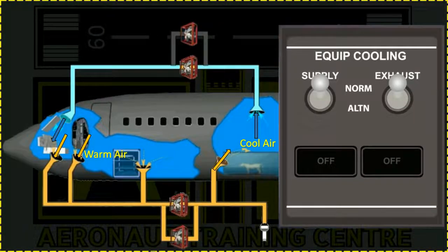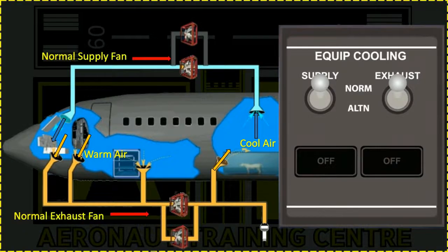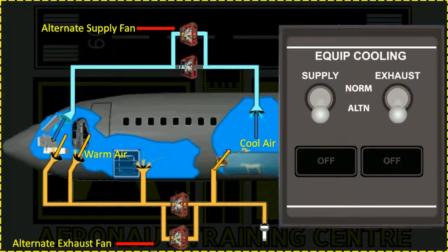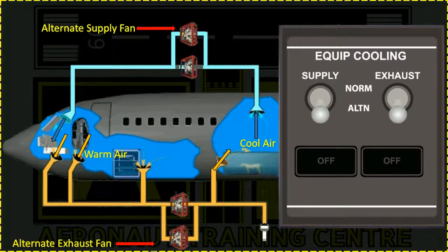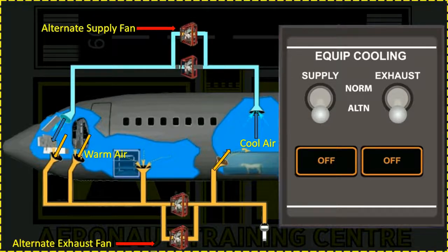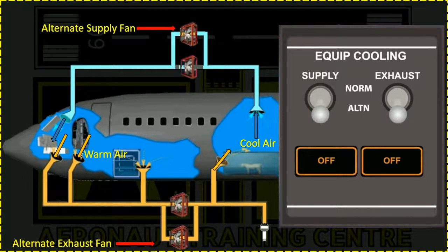Both switches have two positions: Normal, where the normal supply and exhaust fans are operational; and Alternate, where the alternate supply and exhaust fans are activated. One knows when to switch between fan types when the OFF light below each switch illuminates, indicating little or no airflow from the selected fan. When the OFF light comes on for both fans, the airplane electrical system must be partly shut down to reduce the electrical load and bring the equipment temperature down.